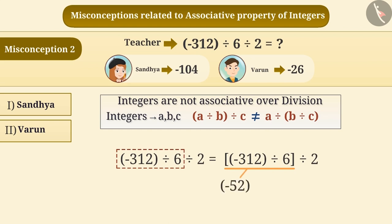Then, we have to divide minus 52 by 2. By doing so, the correct result is minus 26. Therefore, we can say that Sandhya has given an incorrect answer and Varun has given the correct answer.